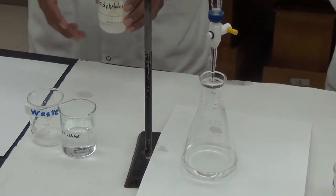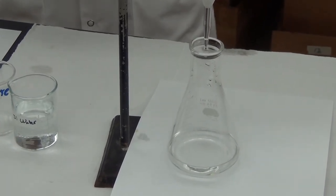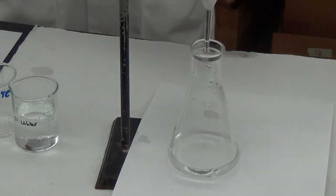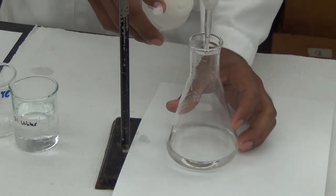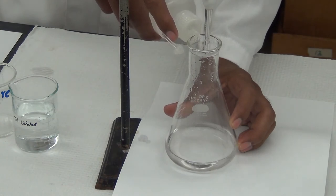As an example, we'll perform a simple titration. In the flask, we have 50 milliliters of vinegar to which we've added a few drops of phenolphthalein. This is the analyte. In the burette is our titrant, a standardized solution of sodium hydroxide.